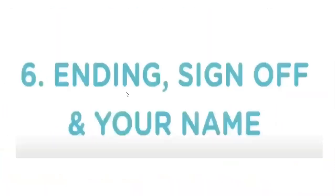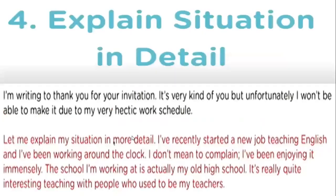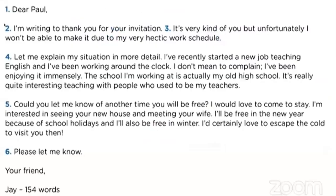Step six is the ending — sign off and your name. This is straightforward. End with something like: 'Thanks for listening to me' or 'Take my regards, give love to your elders.' Then sign off with 'Your loved one' or 'Your friend,' followed by your name. These are the six things you need to consider in informal letter writing.